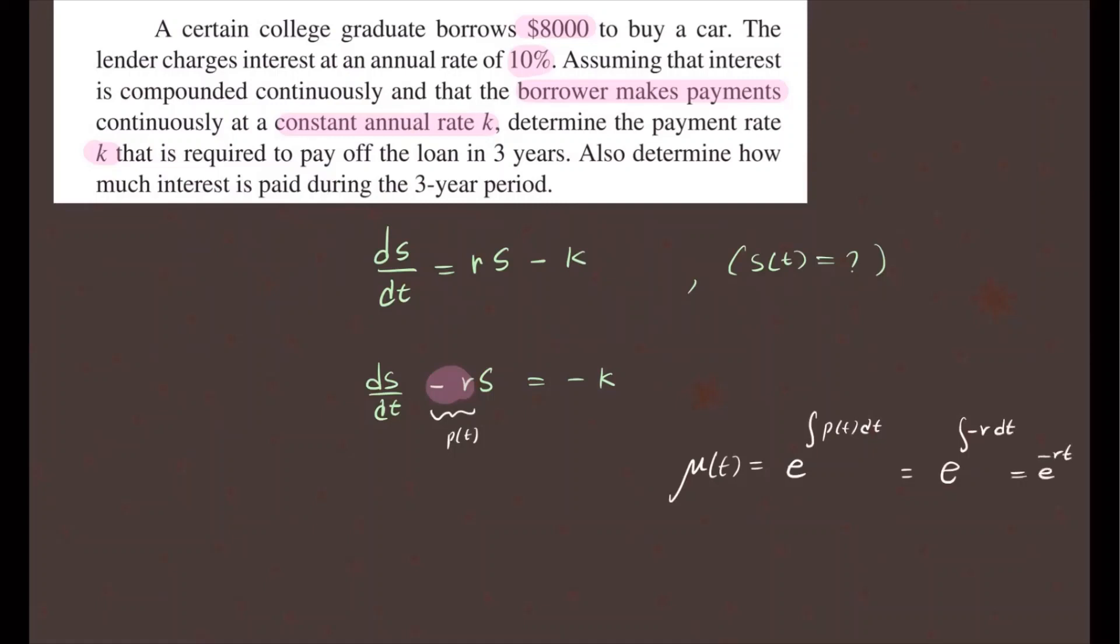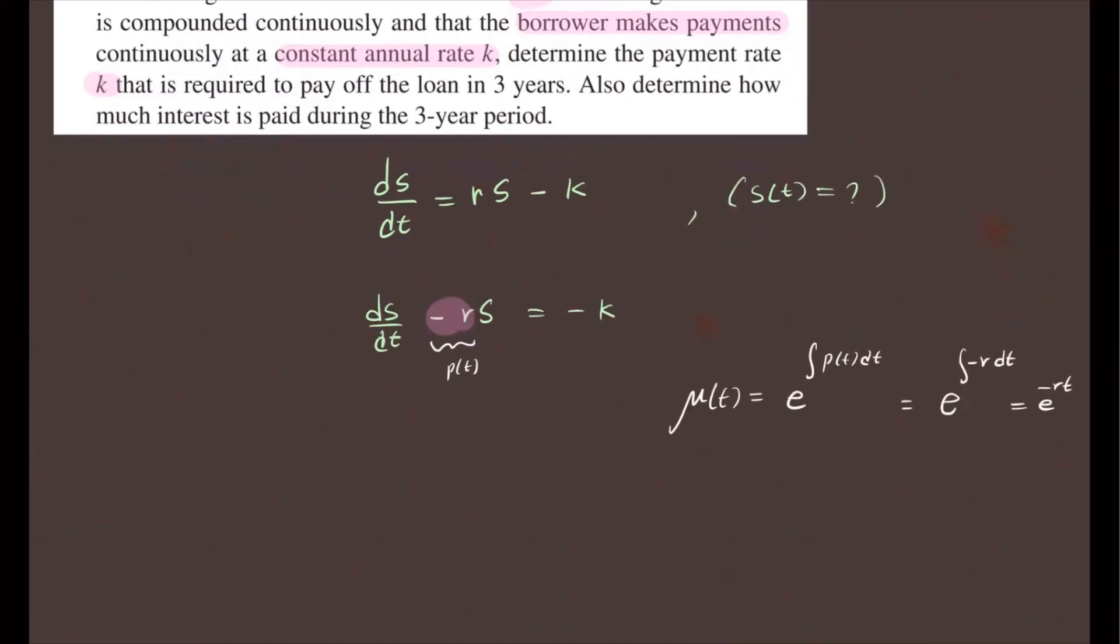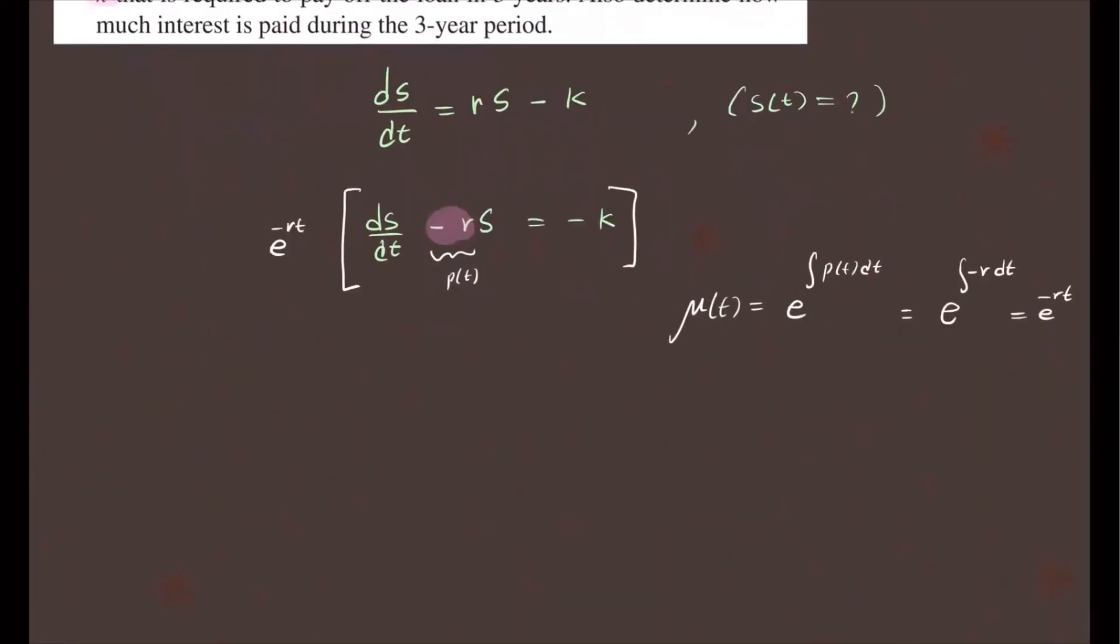So that is our integrating factor. We take that and multiply both sides by that factor to this equation. So we multiply e to the negative Rt on both sides. That gives us e to the negative Rt times dS/dt minus e to the negative Rt times R times S equals negative K times e to the negative Rt. That's what we get when you multiply both sides by this integrating factor mu.